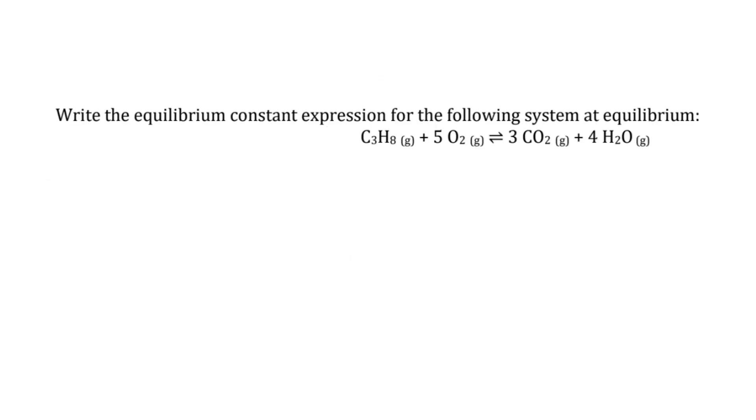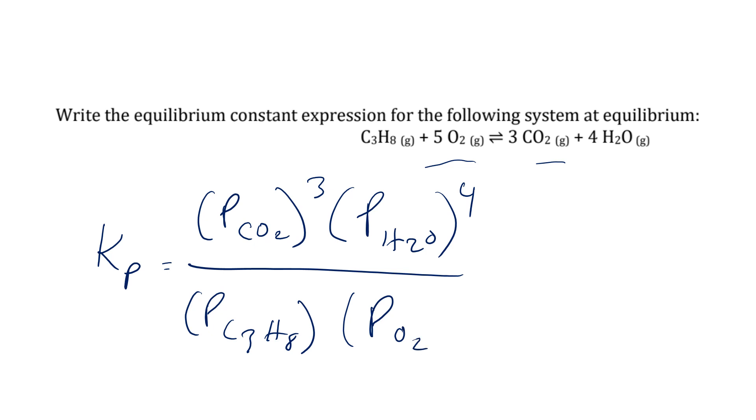Write out the equilibrium coefficient for the following expression, assuming it's at equilibrium. These are all pressures. So we can say KP equals P sub CO2 cubed times P sub H2O to the fourth over P sub C3H8 to the one times P sub O2 to the fifth.